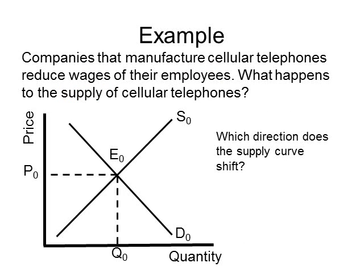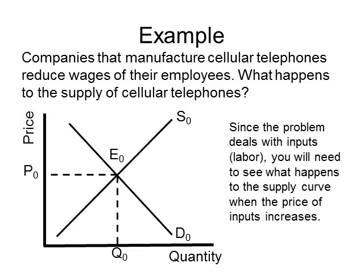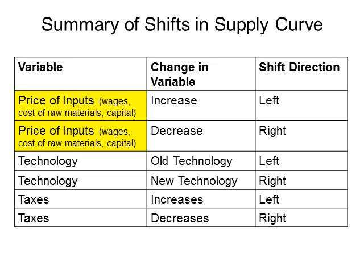Once we've decided this is a supply problem, we need to decide which direction the supply curve shifts. Since the problem deals with the price of inputs, we look at our table to see which direction the supply curve shifts when companies reduce the wages of their workers. We locate the entries for price of inputs, then find the change-in-variable entry where prices decrease. A decrease in wages causes the supply curve to shift to the right.